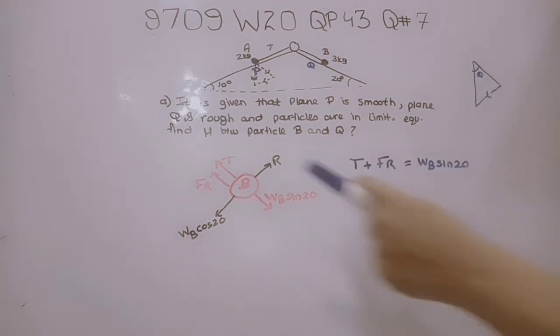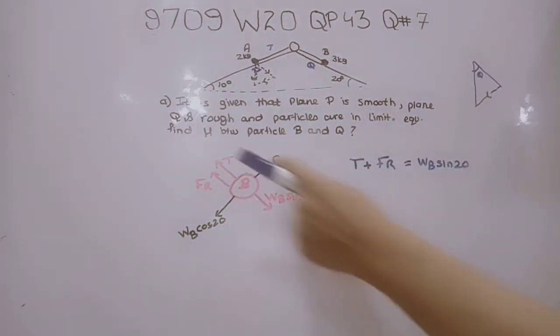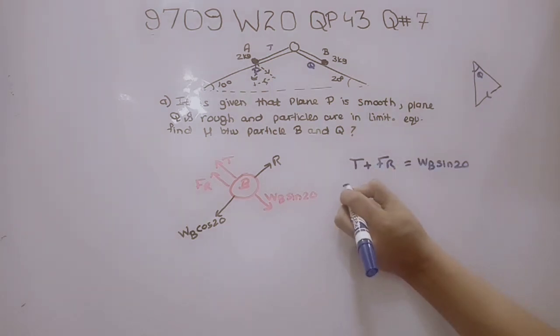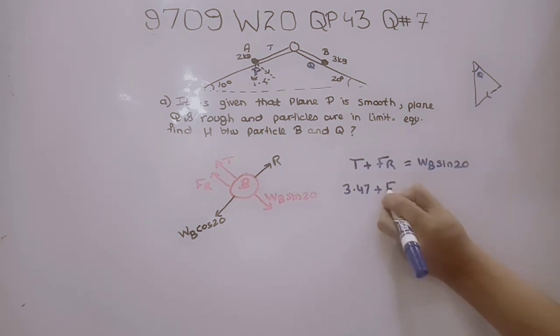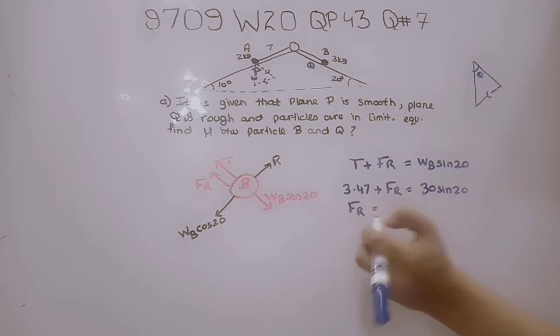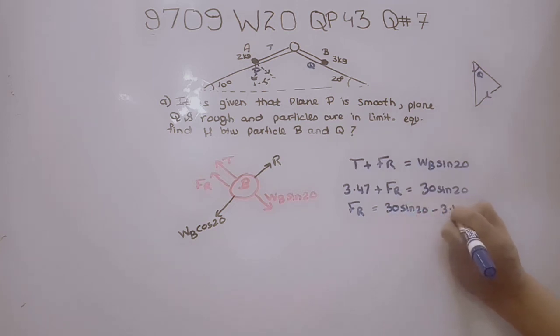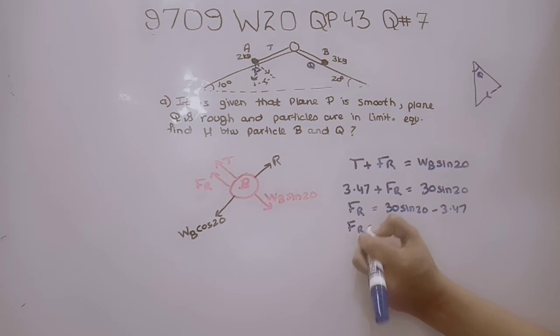Considering all components along the plane, tension plus frictional force equals WB sin 20. The tension is 3.47, and WB is 3 kg, so this becomes T plus F equals 30 sin 20. The frictional force equals 30 sin 20 minus 3.47, which equals 6.79.